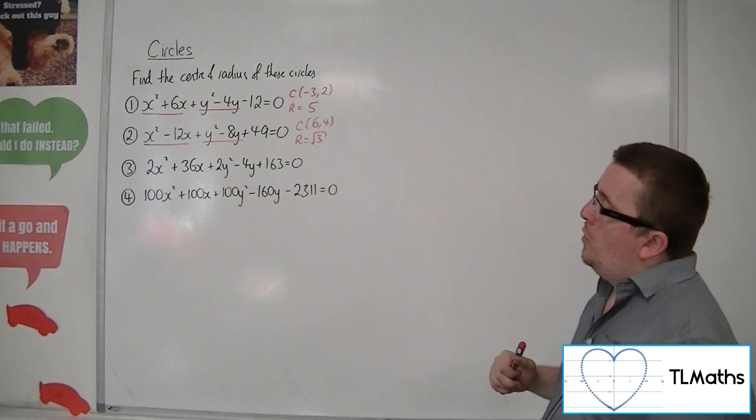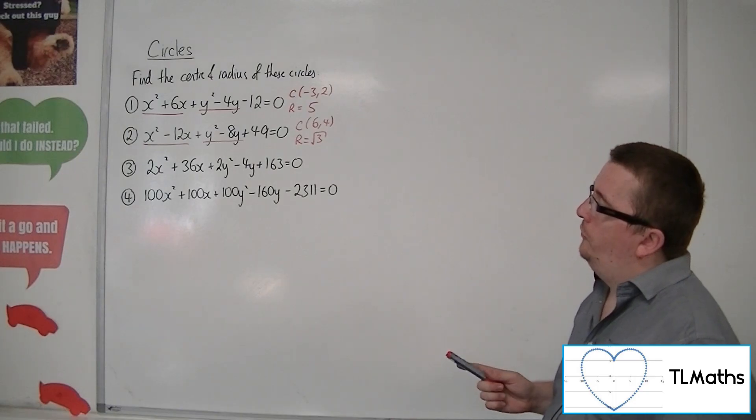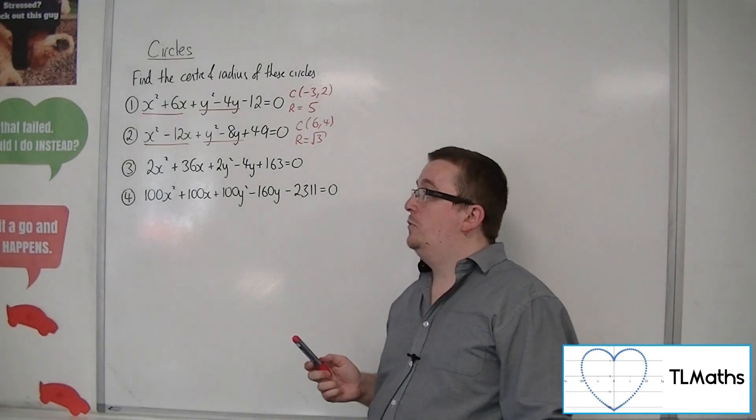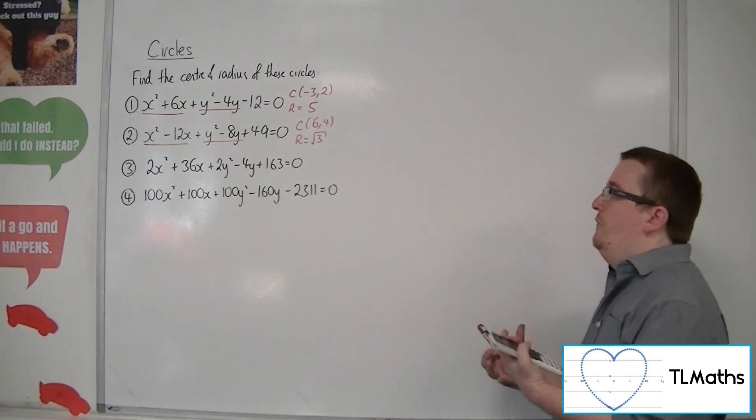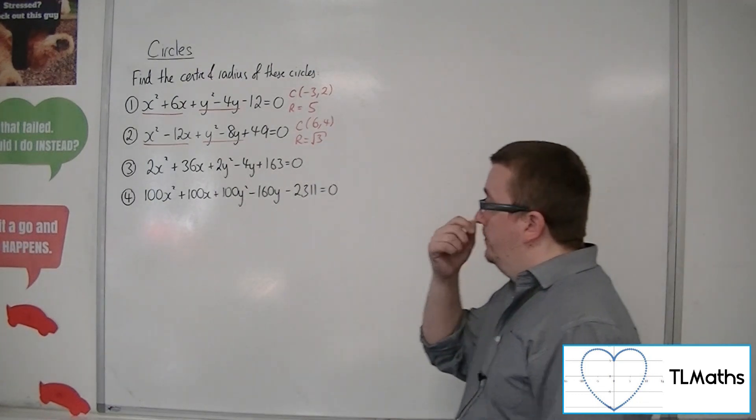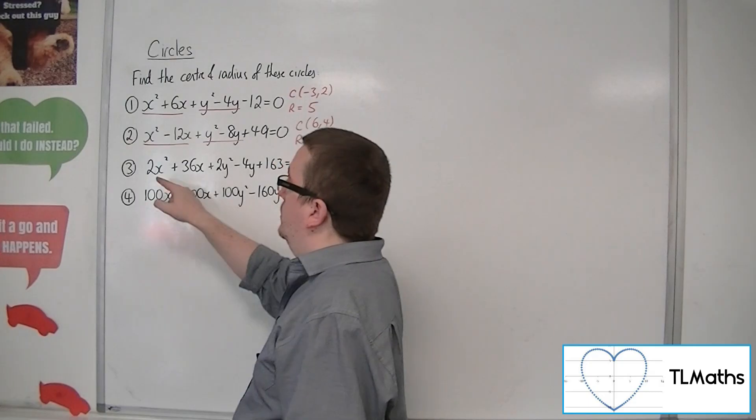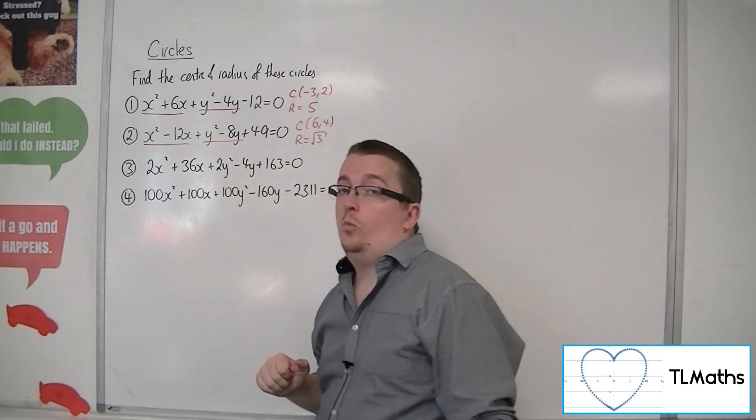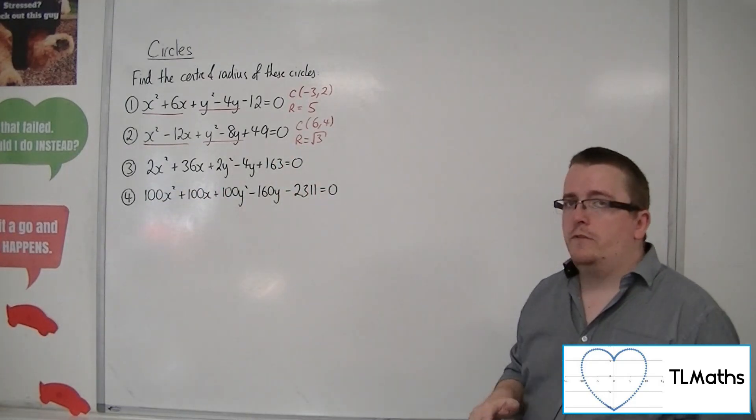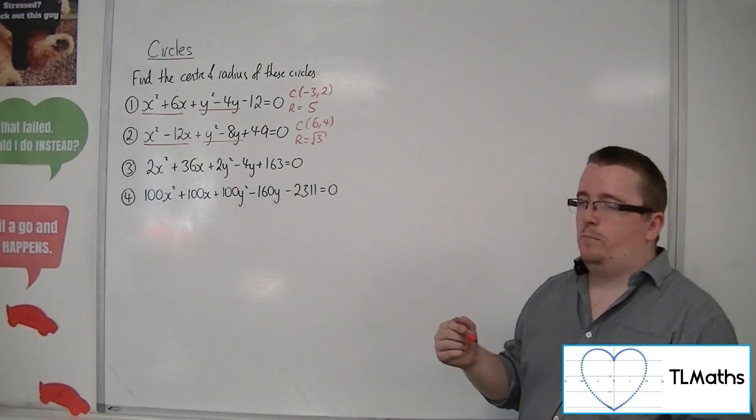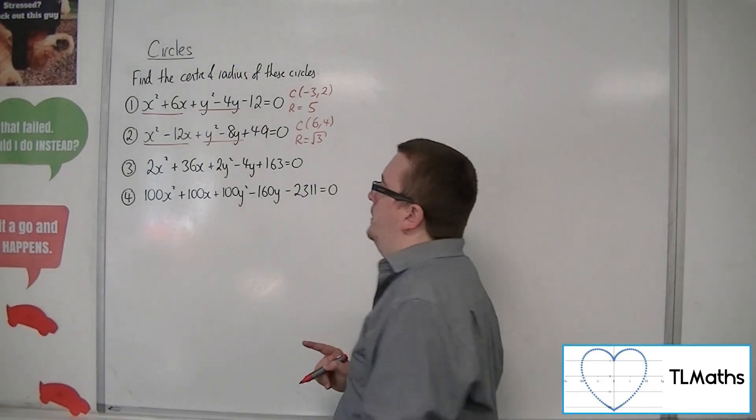So number 3, 2x squared plus 36x plus 2y squared minus 4y plus 163 equals 0. Now if you're faced with this situation, it's a circle, definitely, because we've got 2x squared and 2y squared. So you can divide everything through by 2 first, and that would probably be your best bet.